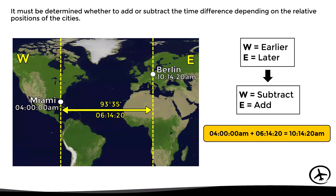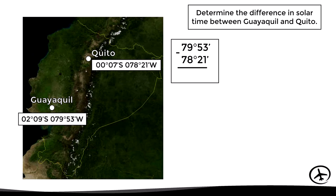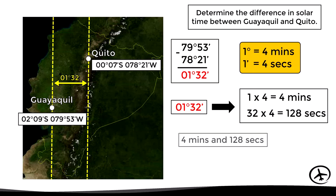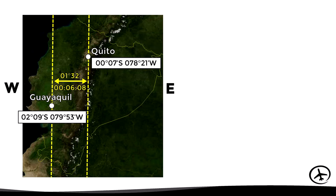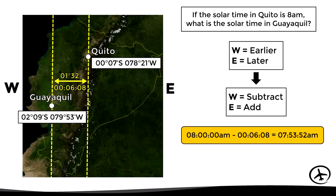With this method it is possible to determine the difference in solar time between any two points, which means that whenever there is a difference in longitude, however small, there will also be a difference in solar time — including cities within the same country. For example, Quito and Guayaquil are two cities in Ecuador. Since both are on the same hemisphere, we subtract the longitudes, obtaining a difference of 1 degree and 32 minutes, which converts to 6 minutes and 8 seconds. Since Guayaquil is to the west, we subtract, giving a solar time of 7:53:52 a.m.